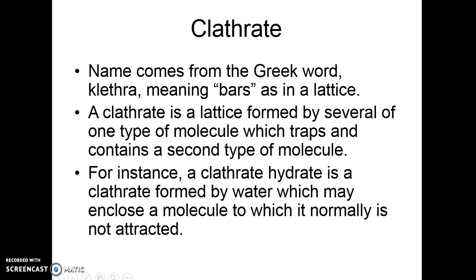A clathrate comes from the Greek word for 'bar,' because in a clathrate you have molecules that join together — usually by hydrogen bonding — to form a cage that holds another molecule inside. A clathrate hydrate is a clathrate formed by water that hydrogen bonds around a molecule, forming that cage.